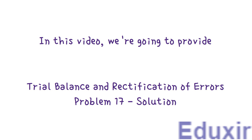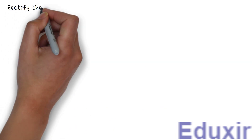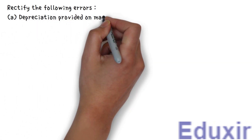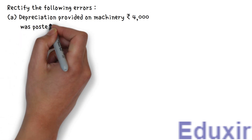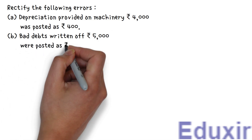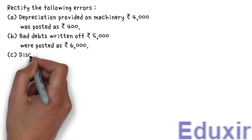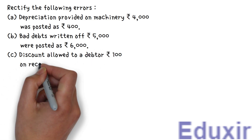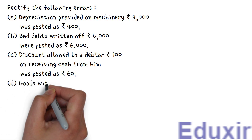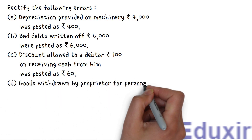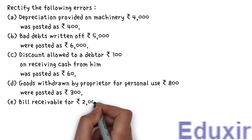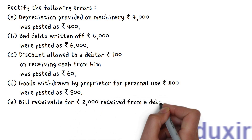The problem statement is as follows. Rectify the following errors. A: Depreciation provided on machinery, 4,000 rupees was posted as 400 rupees. B: Bad debts written off, 5,000 rupees were posted as 6,000 rupees. C: Discount allowed to a debtor, 100 rupees on receiving cash from him was posted as 60 rupees. D: Goods withdrawn by proprietor for personal use, 800 rupees were posted as 300 rupees. E: Bill receivable for 2,000 rupees received from a debtor was posted as 3,000 rupees.